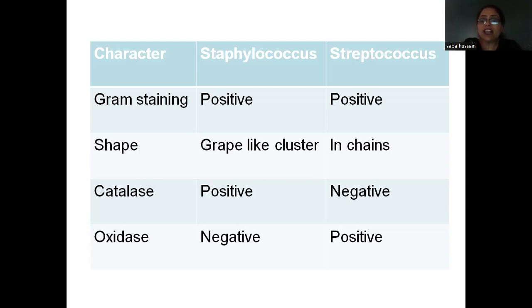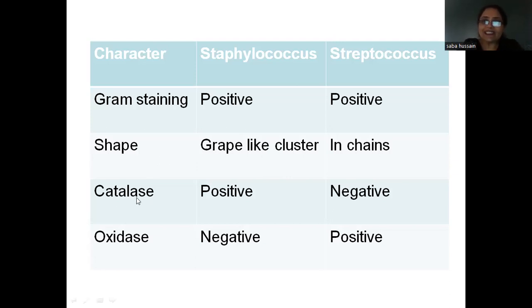We go for culture characteristics also, and the culture characteristics I have discussed in detail in my previous video on Staphylococcus genus. Streptococcus we will be discussing sometime later. So now, after seeing an organism that is gram positive, we can perform certain biochemical tests. If we perform a catalase test first — what is a catalase test and how you differentiate between a negative and a positive test — that we will be discussing in the next slides.